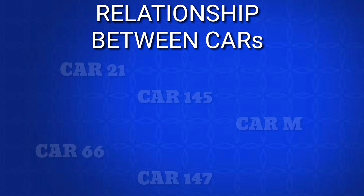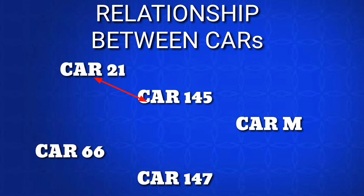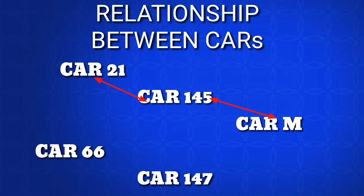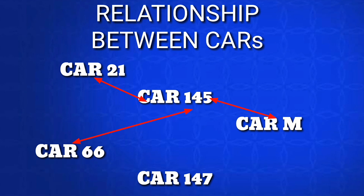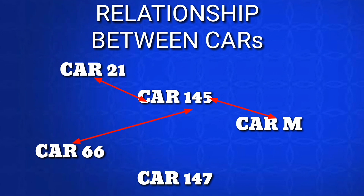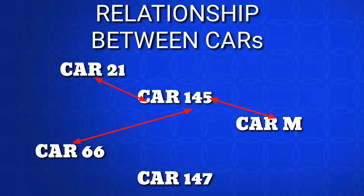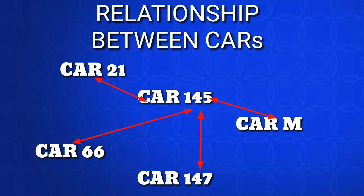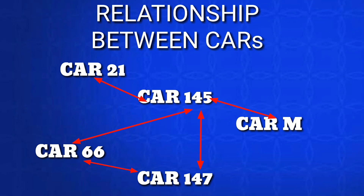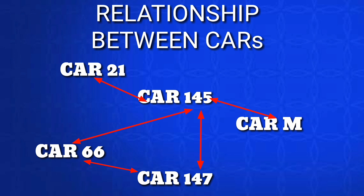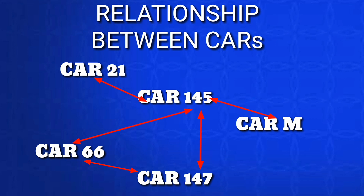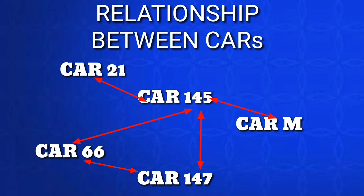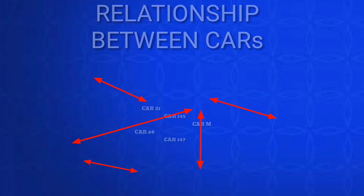The next topic is the relationship between the CARs. CAR21 is a production organization, which will be maintained by CAR145. CAR M provides the regulation for continuing airworthiness for the maintenance organization, which is again linked with CAR145. CAR66 provides the syllabus for every maintenance personnel and other tasks. CAR147 covers type training, which provides type-rated engineers to CAR145 maintenance organizations. CAR66 also gives a syllabus regarding all CAR147. So all are interrelated and very important to study.